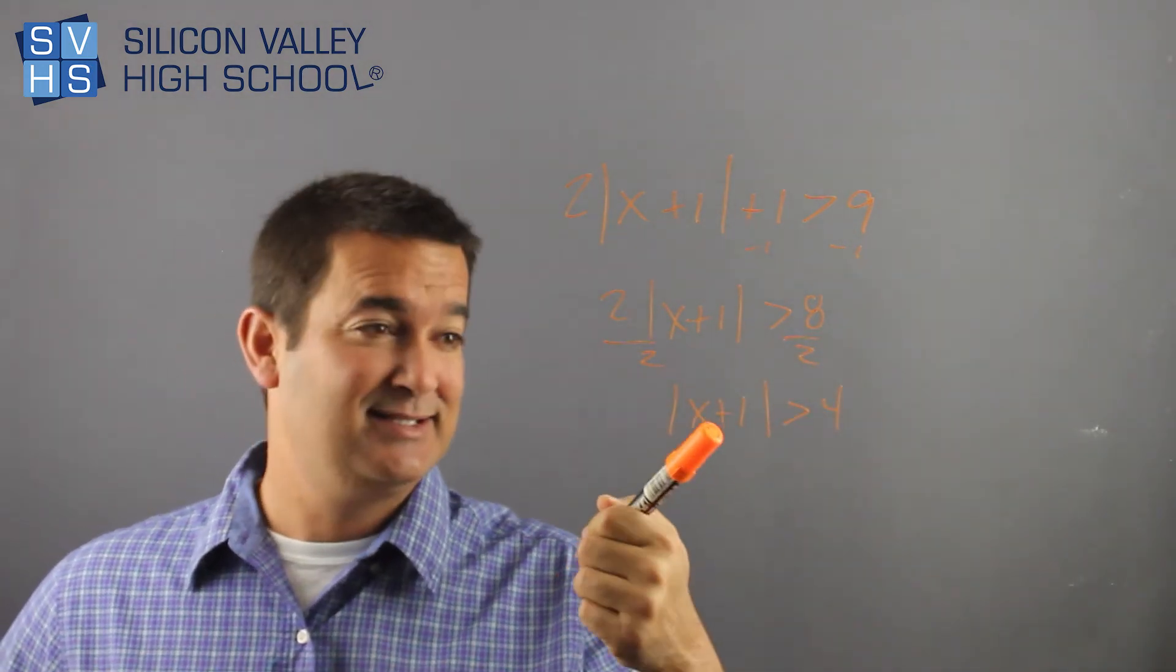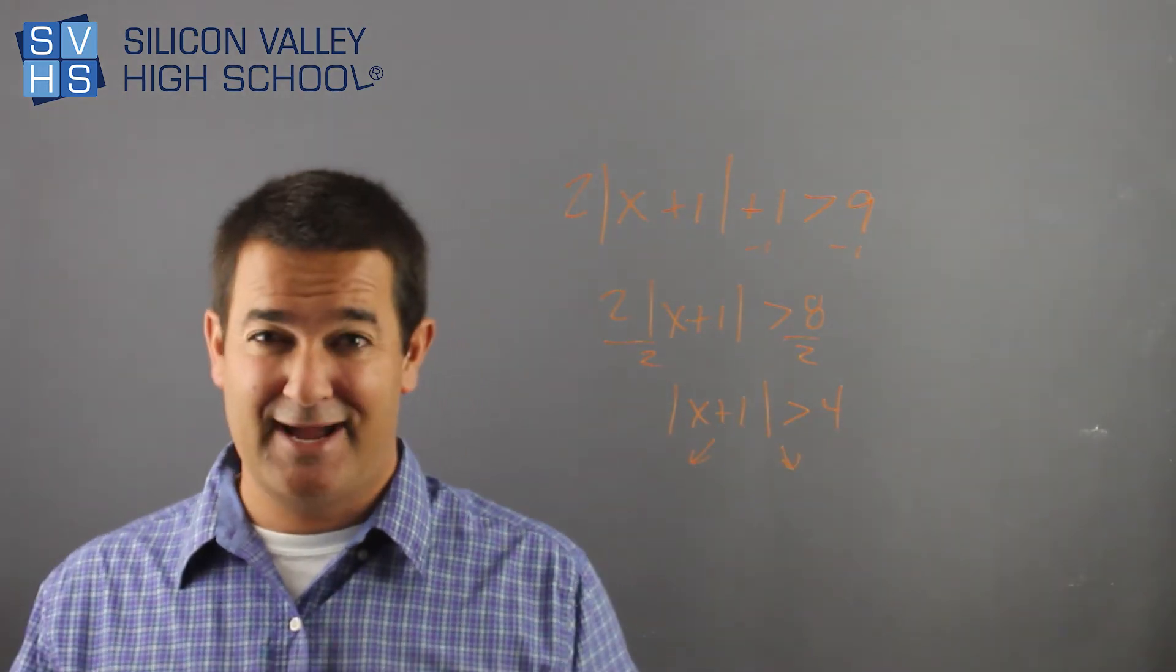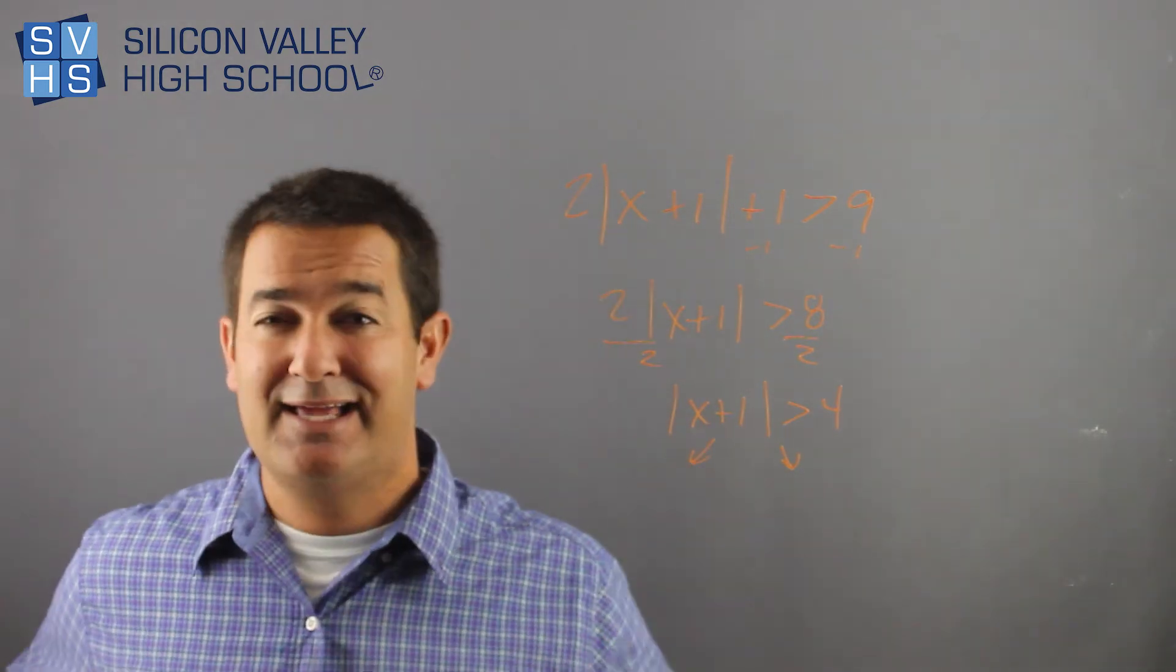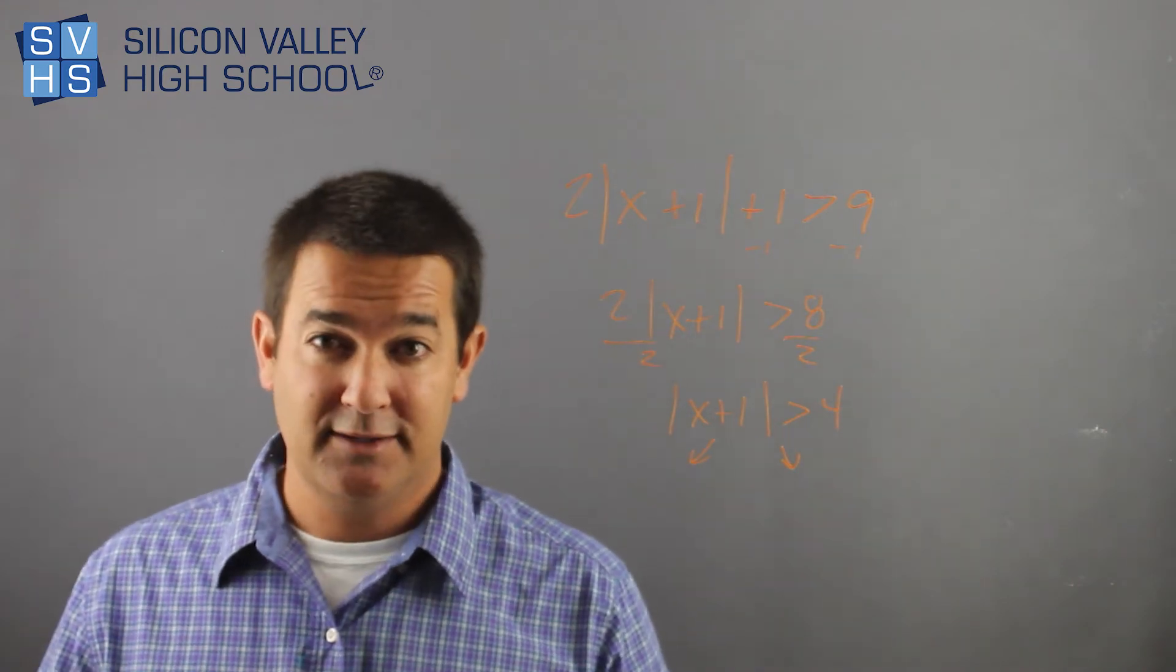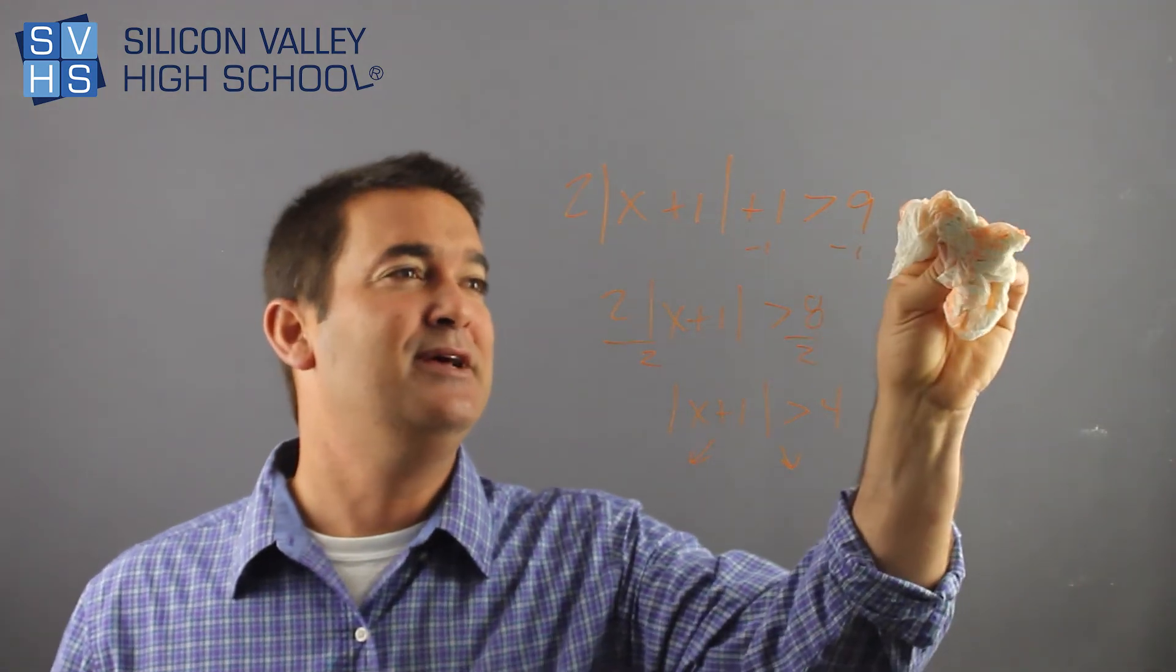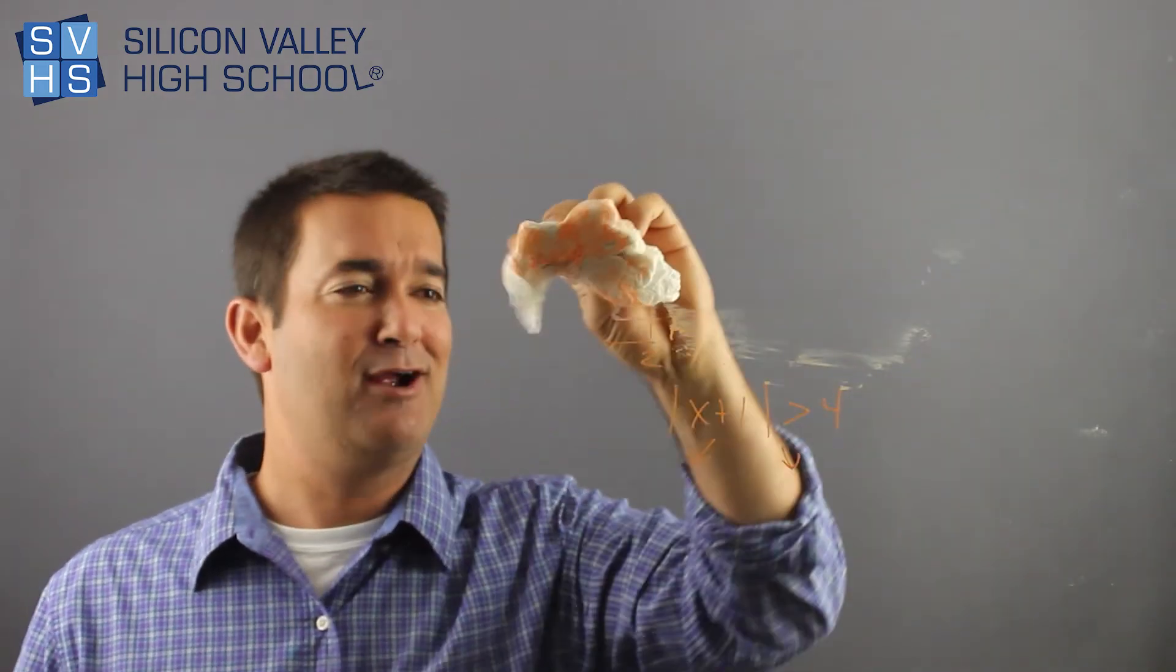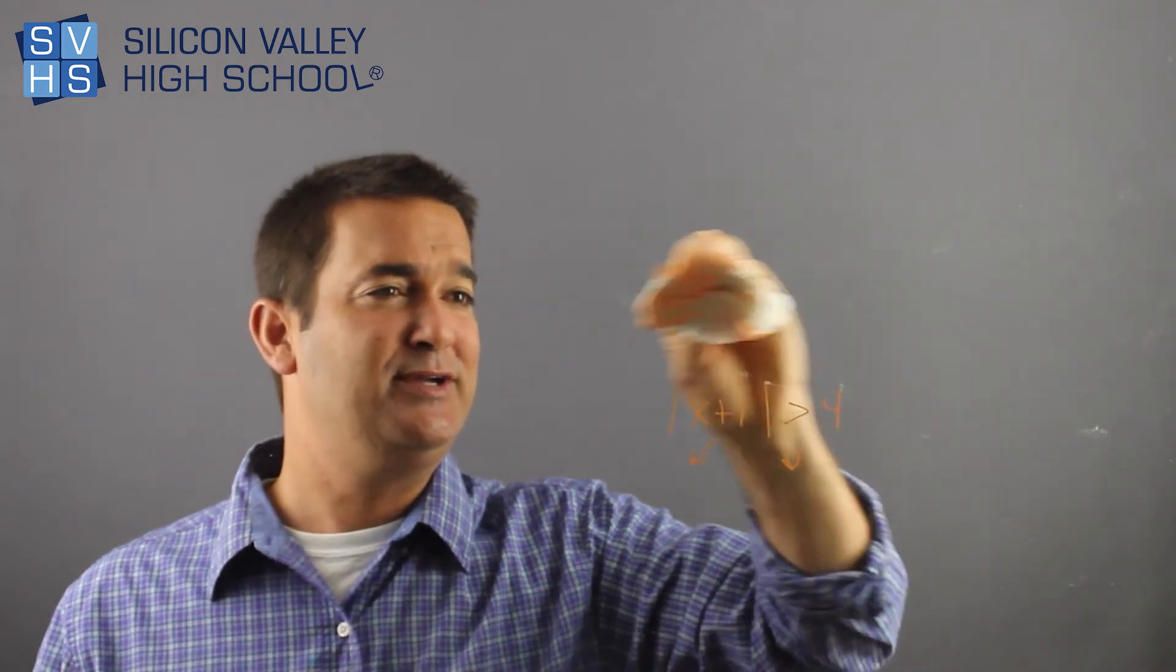Now, because this absolute value is isolated, now you can do the whole two arrows thing. Right? So again, I think a lot of the problems are already going to be isolated absolute value. But if they're not like this, you got to do a little pre-work. You got to do a little pre-game session. So I'm going to erase this so it's out of the way. I only have so much valuable airspace in front of me to do these beautiful math problems that we all enjoy so much.